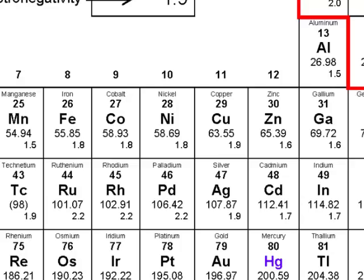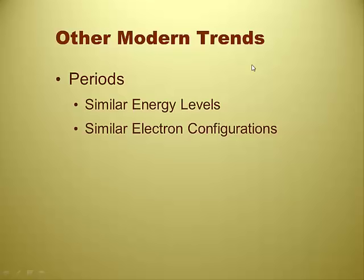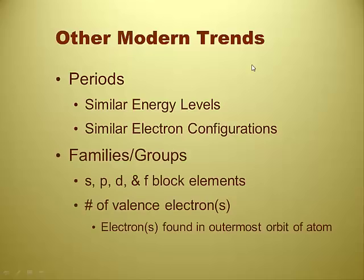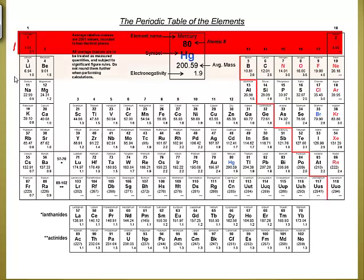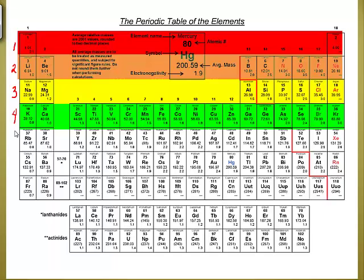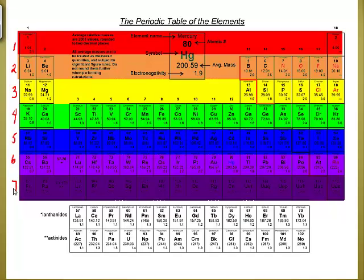Periods have similar energy levels and similar electron configurations, and we'll wind up talking about electron configurations very soon, probably the next lecture. Similar energy levels should look like this: period one has one energy level, period two has two energy levels, period three has three energy levels, then four, five, six, and seven energy levels and so on. Some people actually have periodic tables in their classroom that have these numbers written on them.